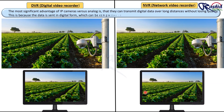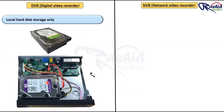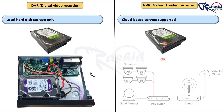The most significant advantage of IP cameras versus analog is that they can transmit digital data over long distances without losing quality. This is because the data is sent in digital form, which can be compressed and transmitted more efficiently. Both DVR and NVR record video footage onto a hard drive. Most DVRs have no cloud storage functions, but some newer versions do. While they can record on the cloud, their functions and hardware are not as good as NVRs, as they are simply not designed for that purpose. NVRs work better with cloud-based technologies and are more specialized to store footage on the cloud, reducing local storage burden and protecting recordings in case of hard drive damage.